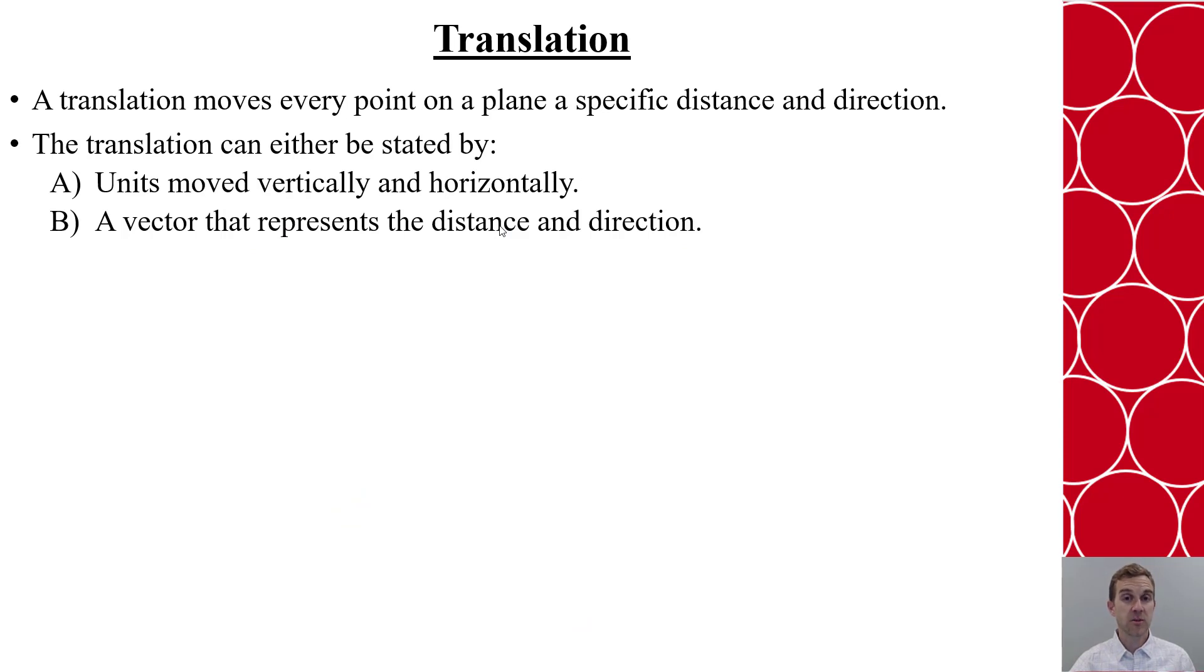Now let's look at these transformations. Let's start with the translation. A translation moves every point on a plane a specific distance and direction. We can either do this by specifically stating the movements both vertically and horizontally, or we could be provided a vector that represents the distance and direction for which the translation will occur.